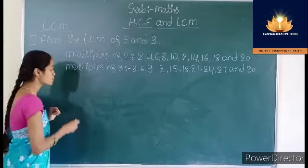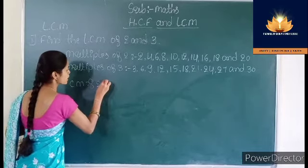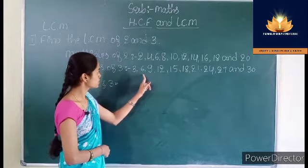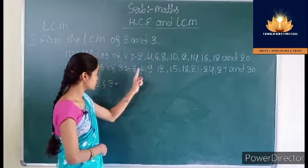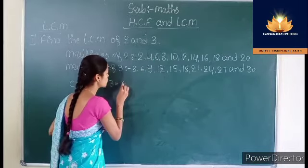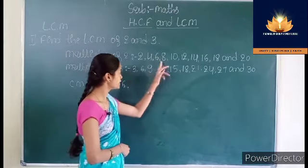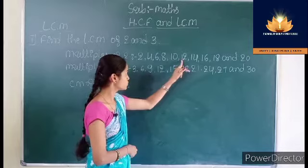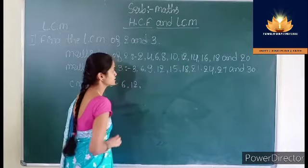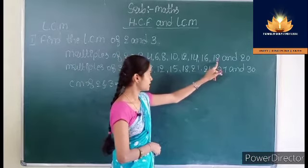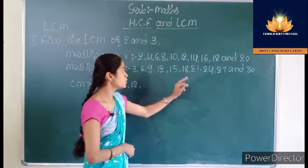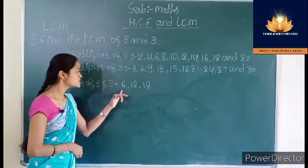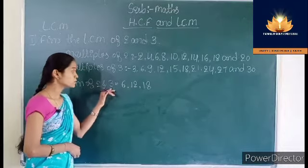Now we have to identify the common multiples of 2 and 3. 2 is not a multiple of 3. 4 is not a multiple of 3. 6 is a multiple of 3, so 6 is a common multiple of 2 and 3. 8 and 10 are not common multiples. 12 is a multiple of both 3 and 2, so 12 is a common multiple. 18 is also a multiple of 3, so 18 is a common multiple. 20 is not a multiple of 3. So 6, 12, and 18 are the common multiples of 2 and 3.